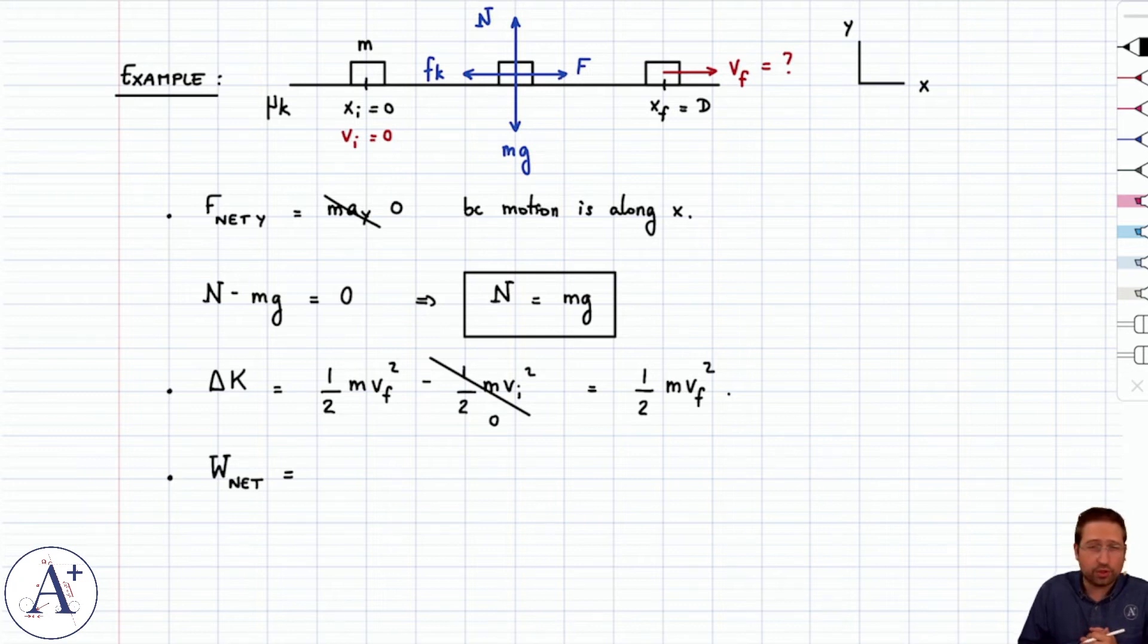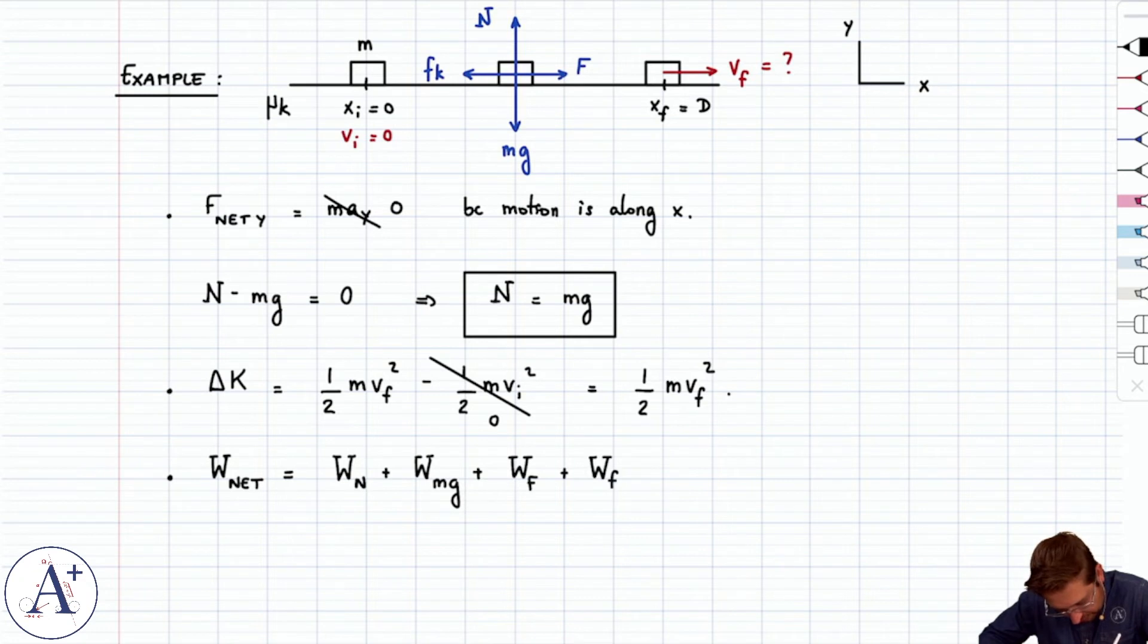Well, work net is the work done by all the forces. And there are four forces, so there are four terms in the network. So there's work done by the normal, work done by mg, work done by capital F, and work done by kinetic friction fk. And I'm going to go through one at a time and compute each one.